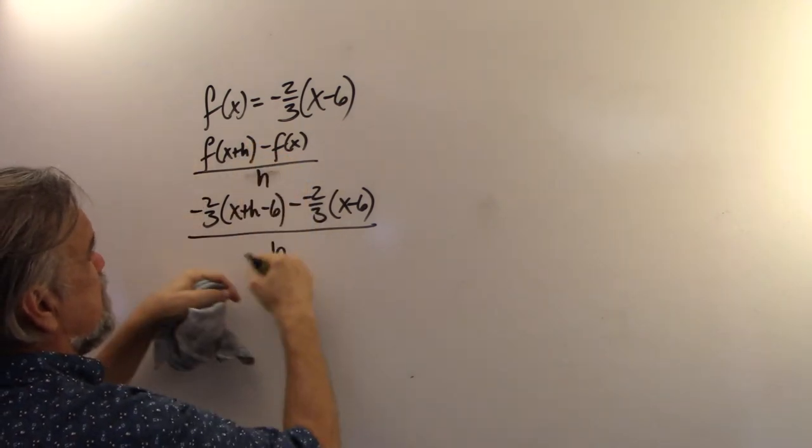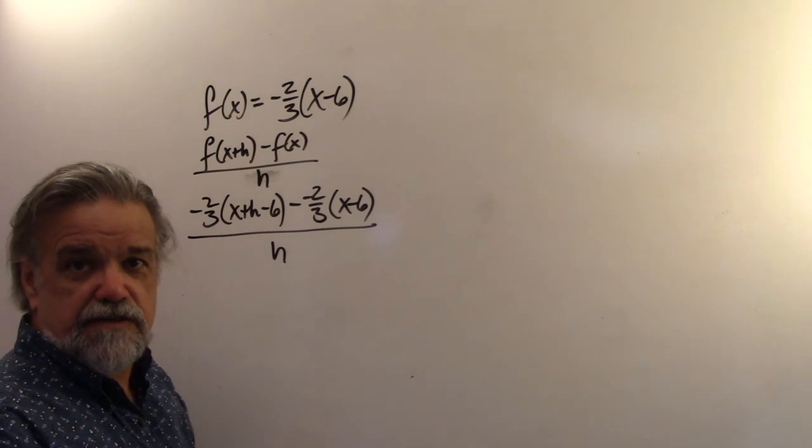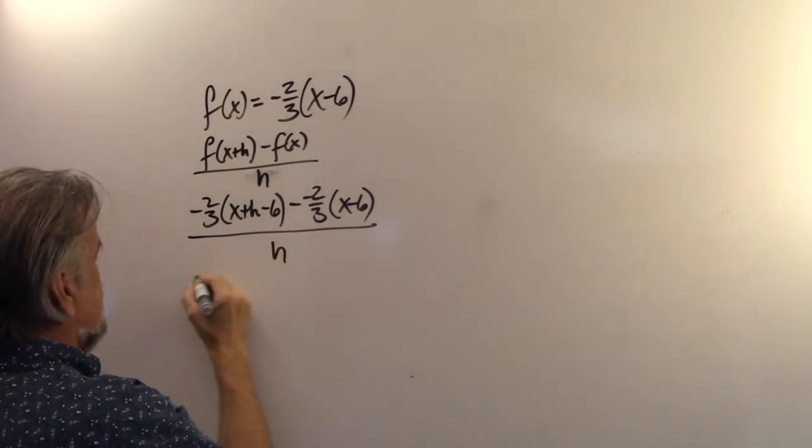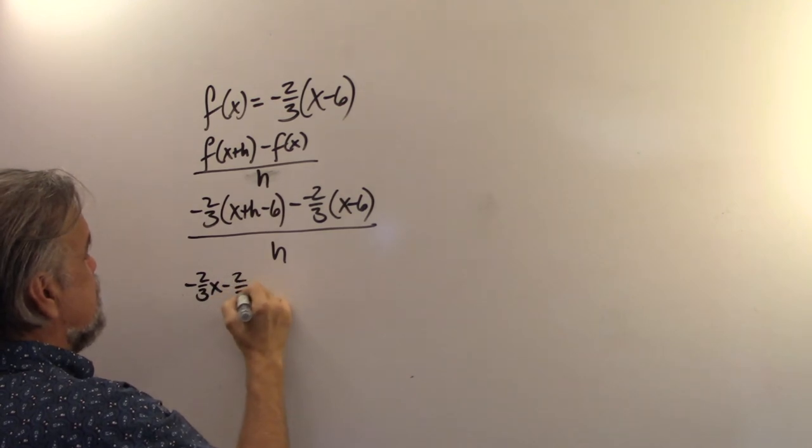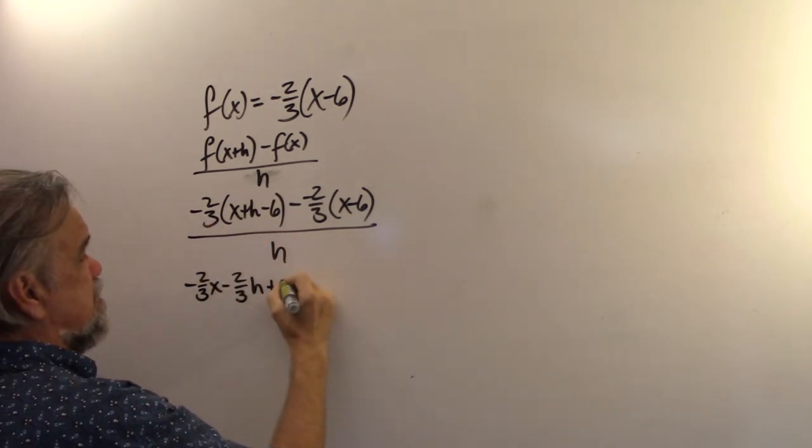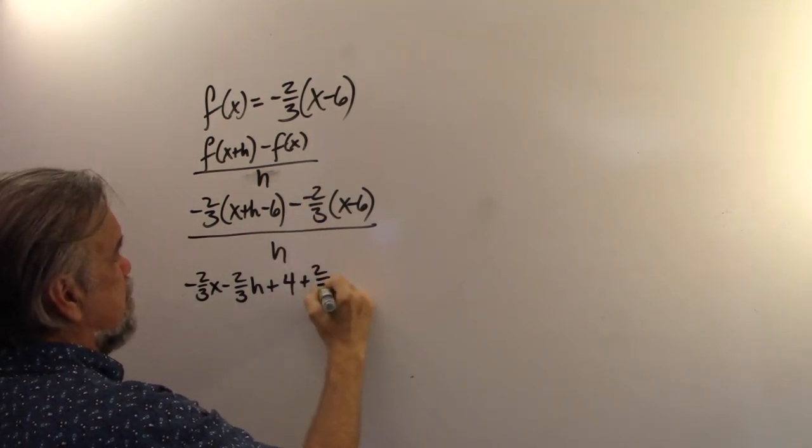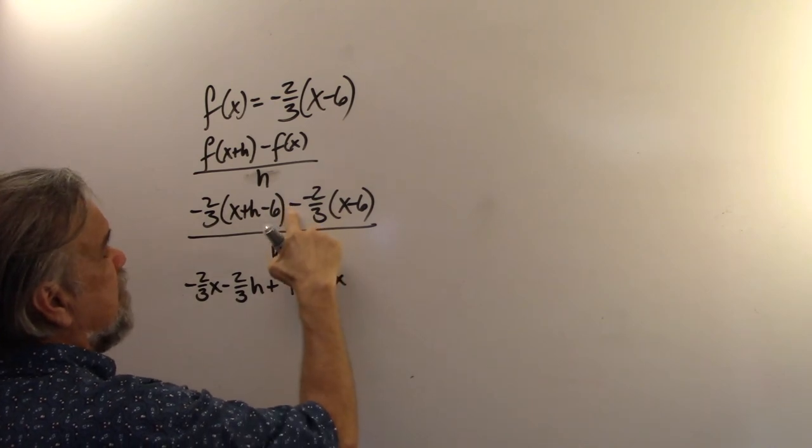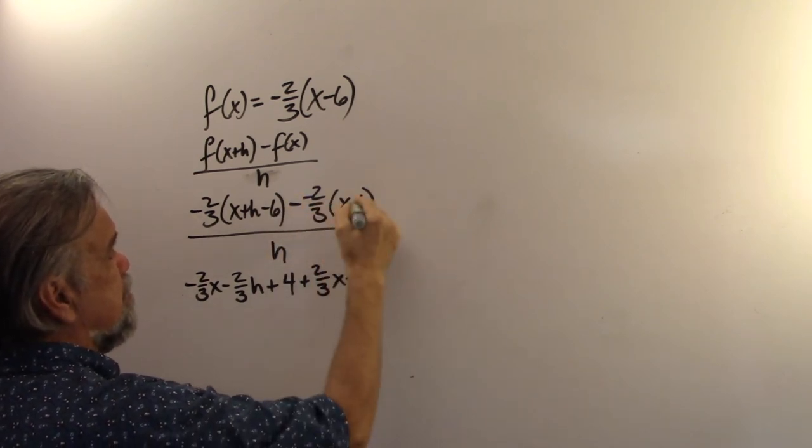This part is f of x plus h. And this part is f of x. Let's just distribute out everything we have there. So negative 2 thirds times x minus 2 thirds times h plus 2 thirds times 6 is 4.